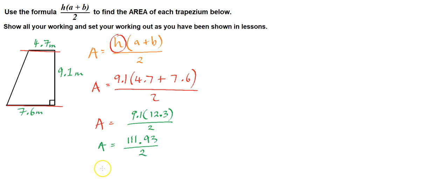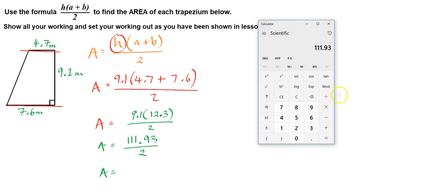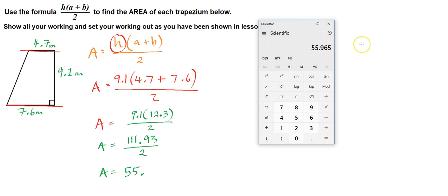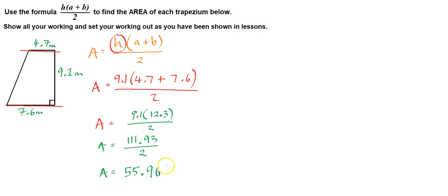And that gets divided by 2. So let's divide it by 2, divided by 2, equals, and let's just write out the full value there, no need to round. 55 point, let's just have a look at it again, 9.65. So 55.965.